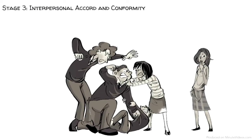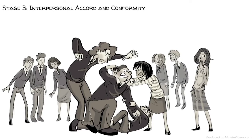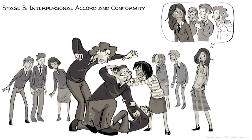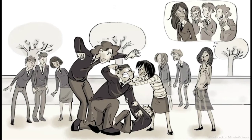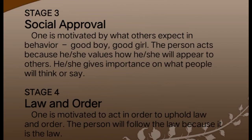As an example of stage three — interpersonal accord and conformity — Betty sees a fight and wants to intervene. But when she realizes that all the others are just watching, she decides not to get involved. She wants others to see that she is a good girl who is conforming with the ethics of the community. She asks herself, 'What do others think of me?' This means the individual acts to be seen as good by other people, with an emphasis on conformity and how choices influence relationships.